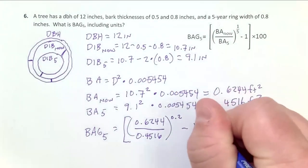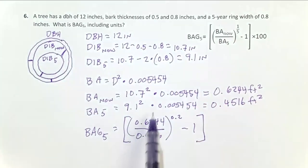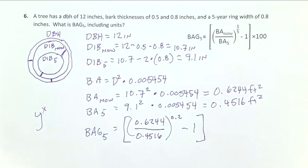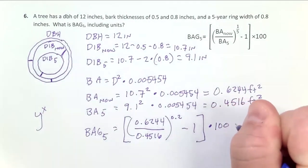We then subtract 1. So order of operations: divide this quantity by that quantity, then raise it to the 0.2 power. On your calculator, that's often a little button that says y to the x, or x to the y. Then we subtract 1. Finally, once we have that quantity, we multiply by 100.